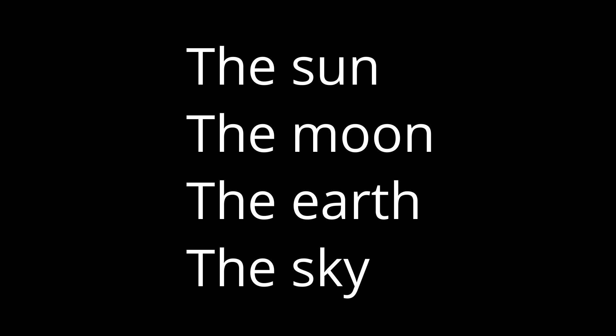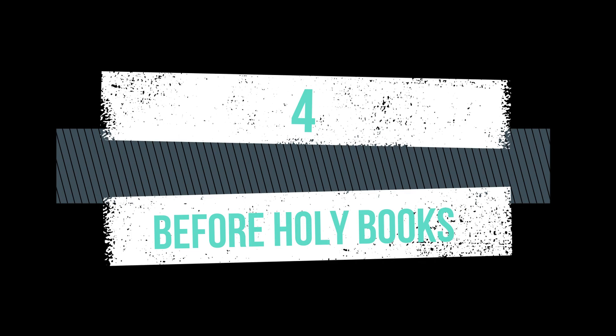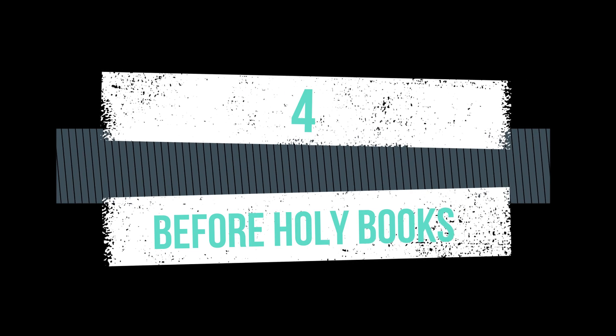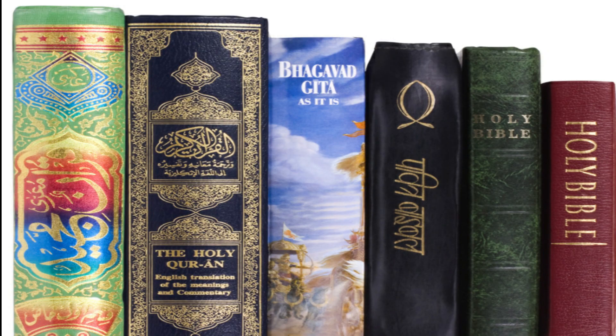The fourth point is: 'the' is used before the names of holy books and religious books. Examples: the Ramayana, the Gita, the Mahabharata, the Quran, the Bible, the Adhigran, the Vedas, etc.